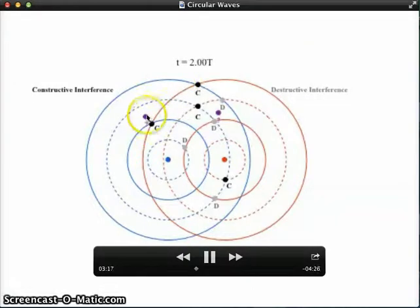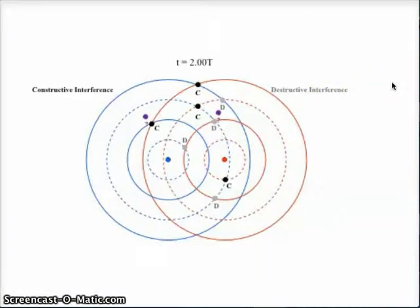But what about, say, these two purple points here that don't line up with any of our crests or troughs? How do we figure out whether those locations are constructive or destructive?